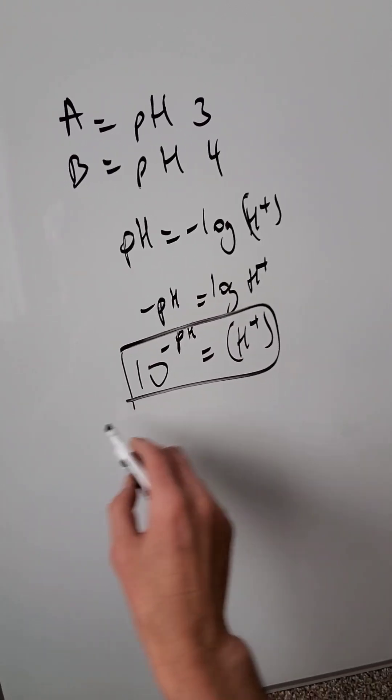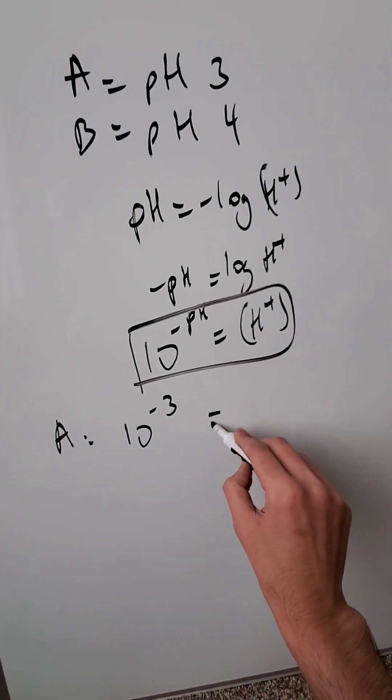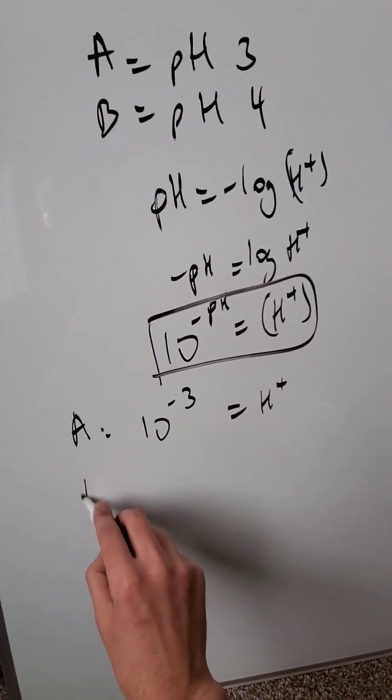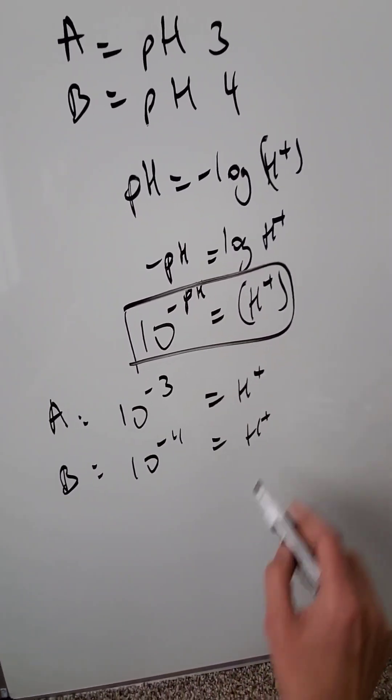For A, 10 to the power of minus 3 - that's the pH - equals its hydrogen ion concentration. For B, we have 10 to the power of minus 4 equals its hydrogen ion concentration.